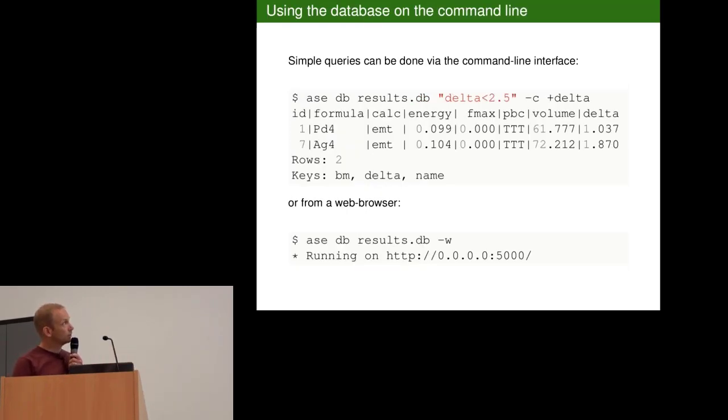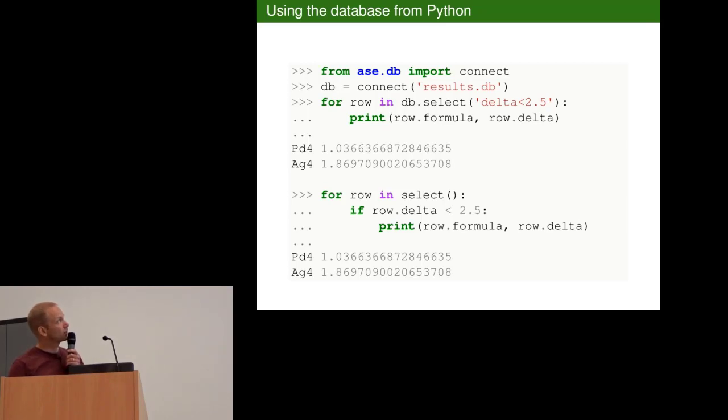The way you work with the results database is from the command line, for example, there's this ASE tool. It has a subcommand called database. And then you can do simple queries. You can look on the ASE web page for how these look. And then you can select and look at what you want to look at. It's important that you put in something so that it becomes easy to find things. Or you can also browse it via a web browser. But the full power of this comes from doing it in a Python script. You can use the same syntax. You say for row in database select and then the query. Then you can print stuff, but you can also do it with just any Python statement.